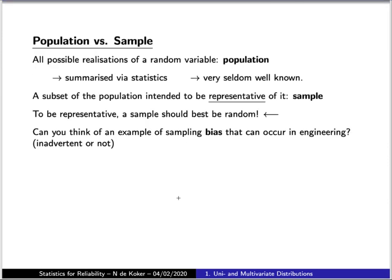If we have a random variable and we have access to all the possible realizations of that variable, that set of realizations is known as the population. Very often this set is actually of infinite size, so almost by definition one cannot know the entire population. But what one can do is summarize the population through a set of values that characterize its behavior, and those values are what are known as statistics. You will see later on that the mean and the standard deviation are the most common examples of statistics.